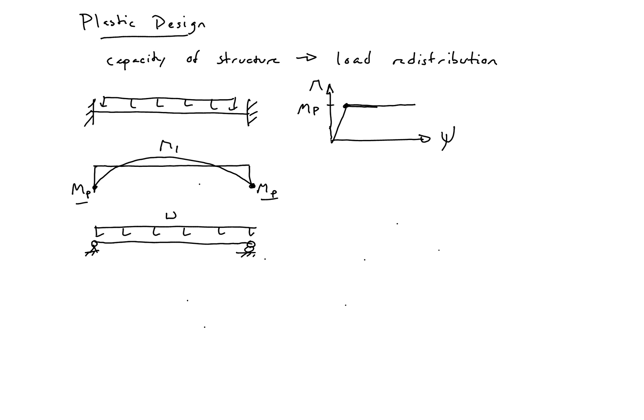So what will happen is we'll add additional load and reanalyze the structure until we reach a total moment at the center equal to MP. So this will be our M2, and collapse will occur when M1 plus M2 equals MP.